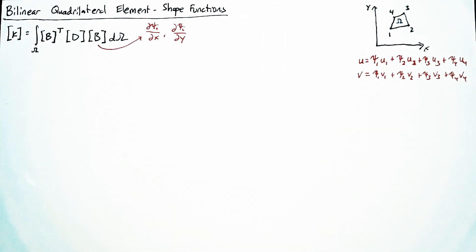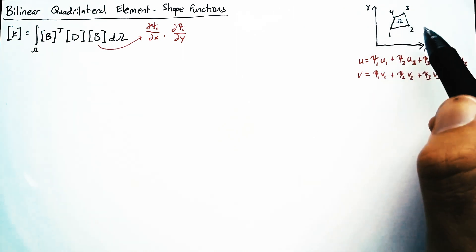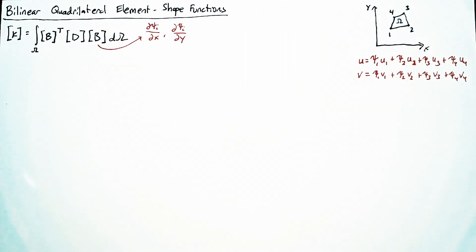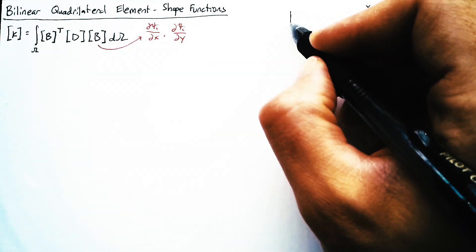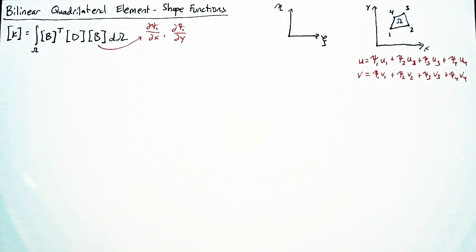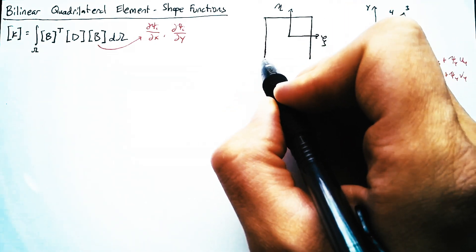So just like with our constant strain triangle, it's very difficult to define these shape functions on the arbitrary position of our element. And so what we do is we define a new coordinate system, xi, eta, and we define our element as going from negative 1 to 1 in both xi and eta.